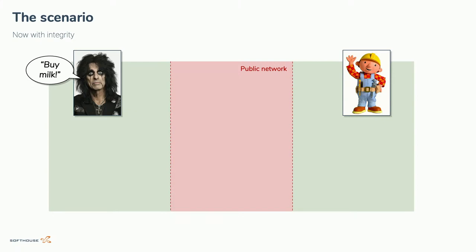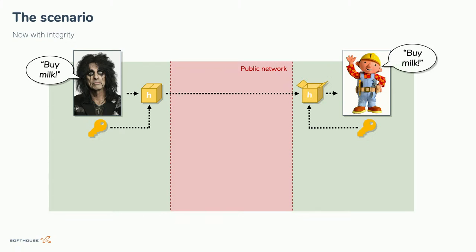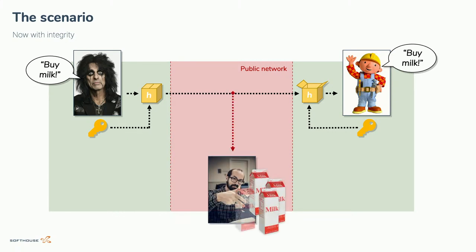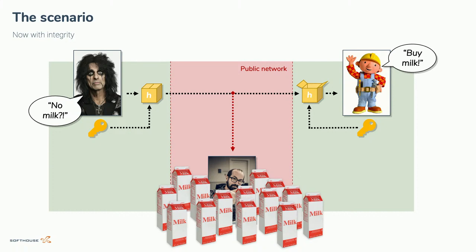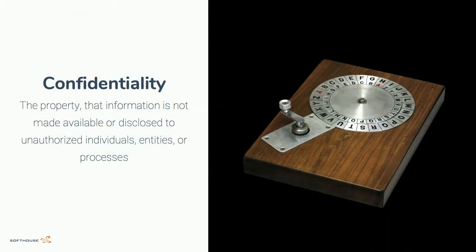Revisiting the scenario: Alice wants to send her 'buy milk' message, so she runs it through a hashing algorithm using the shared key. On the other side, Bob can verify this is really a message sent by Alice because he verifies with the key that only they share. But we haven't fully solved the problem. If I put myself in the middle, I can't change the message because I don't have the key — but I can still read it. I could go off to the store and buy all the milk, creating a denial of service for Bob. We still need confidentiality.